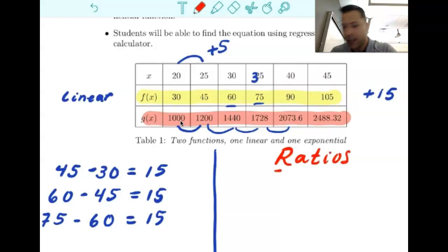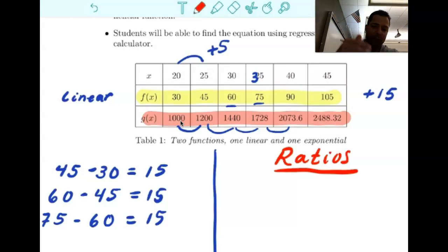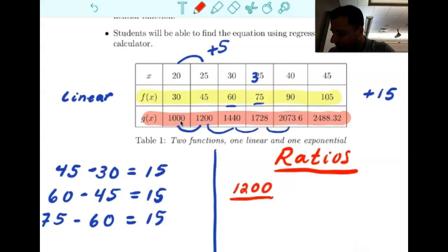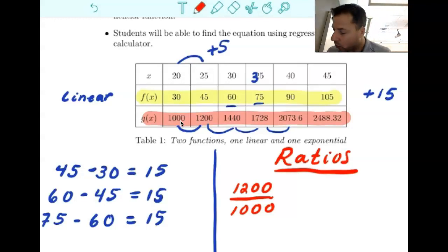So instead of subtracting the next number by the previous number, let's look at 1,200. And we're going to go ahead and divide that by 1,000. And if you look at that, you should or will get 1.2.